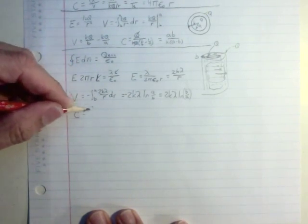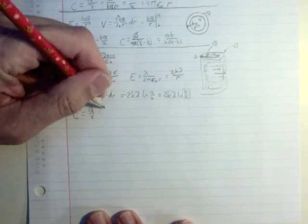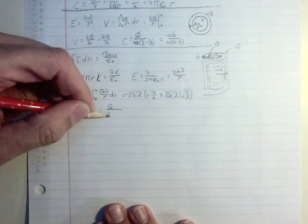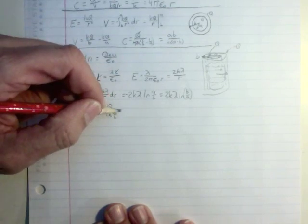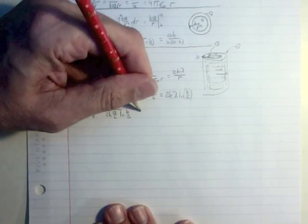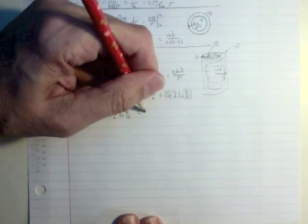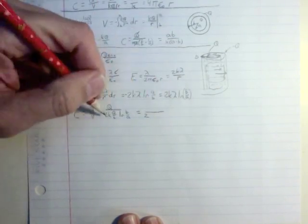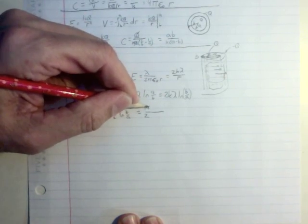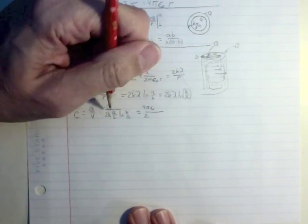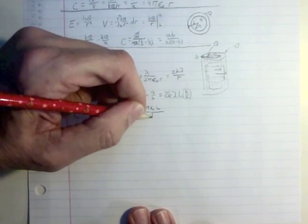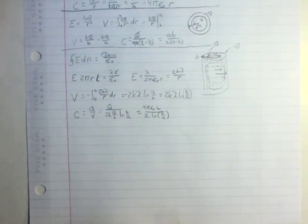So my capacitance then equals q over v equals q over 2k lambda. Instead of lambda, I'm going to put q divided by the length, log of b over a. The q's cancel. l comes up top. And you get 2. Instead of that k, I'm going to put a 4 pi epsilon zero up top. 1 over k is the same as 4 pi epsilon zero. So q's cancel. I get an l up. And I've got a log of b over a on the bottom. And that's really my final form. That's my capacitance. I think that pretty much covers it for now.